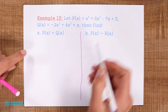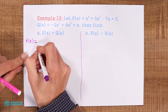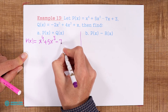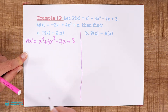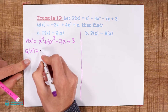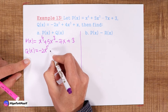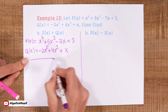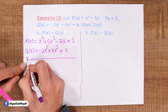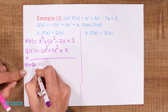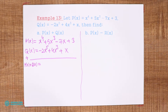For finding the addition, we write p(x) = x⁴ + 5x³ - 7x + 3, and q(x) = -x⁵ + 4x³ + x. We are going to find the addition or the sum of these two polynomials, so we write p(x) plus q(x) is equal to. To find the addition, we must find the like terms.